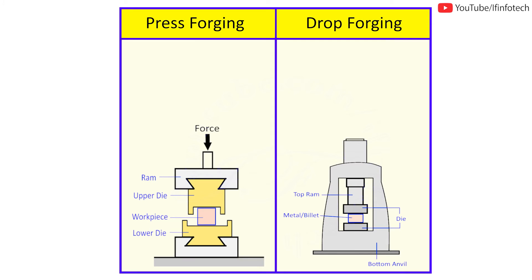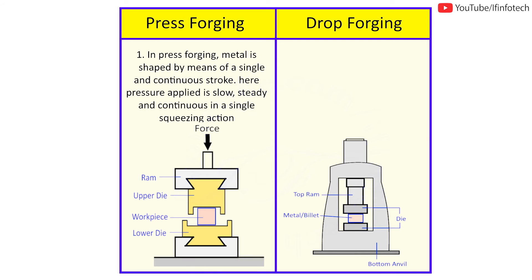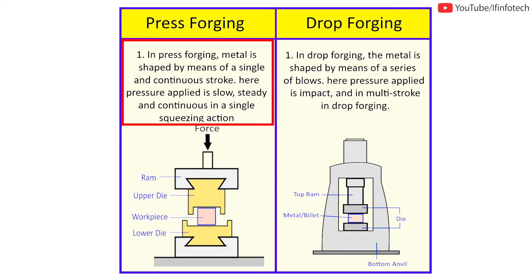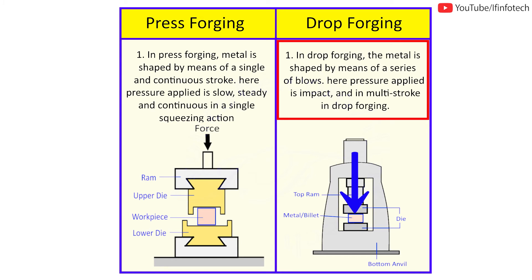The next comparison is press forging and drop forging. In press forging, metal is shaped by means of a single and continuous stroke, where pressure applied is slow, steady, and continuous in a single squeezing action. In drop forging, metal is shaped by means of a series of blows, and the pressure applied is impact-based and in multistroke.